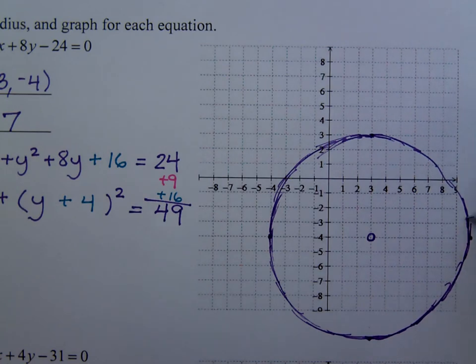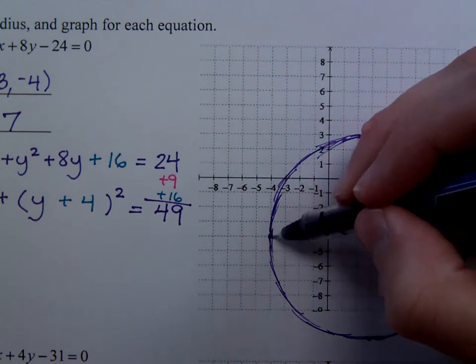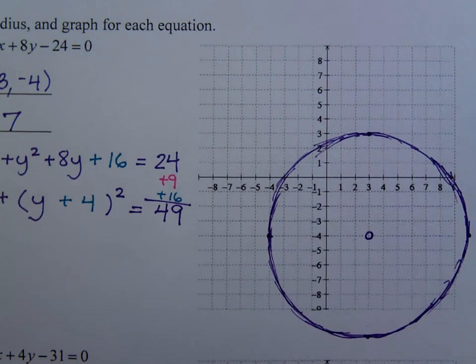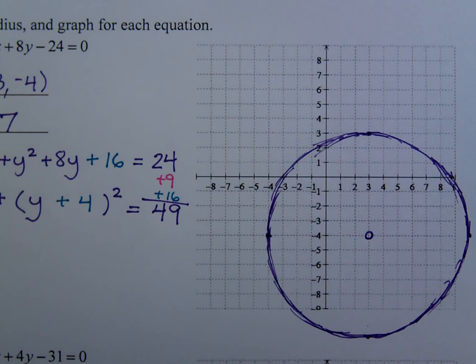I'm sure this would look a lot better if this were not in pen. There we go. So that's a circle with a radius 7, and it's got the center that we've already identified.